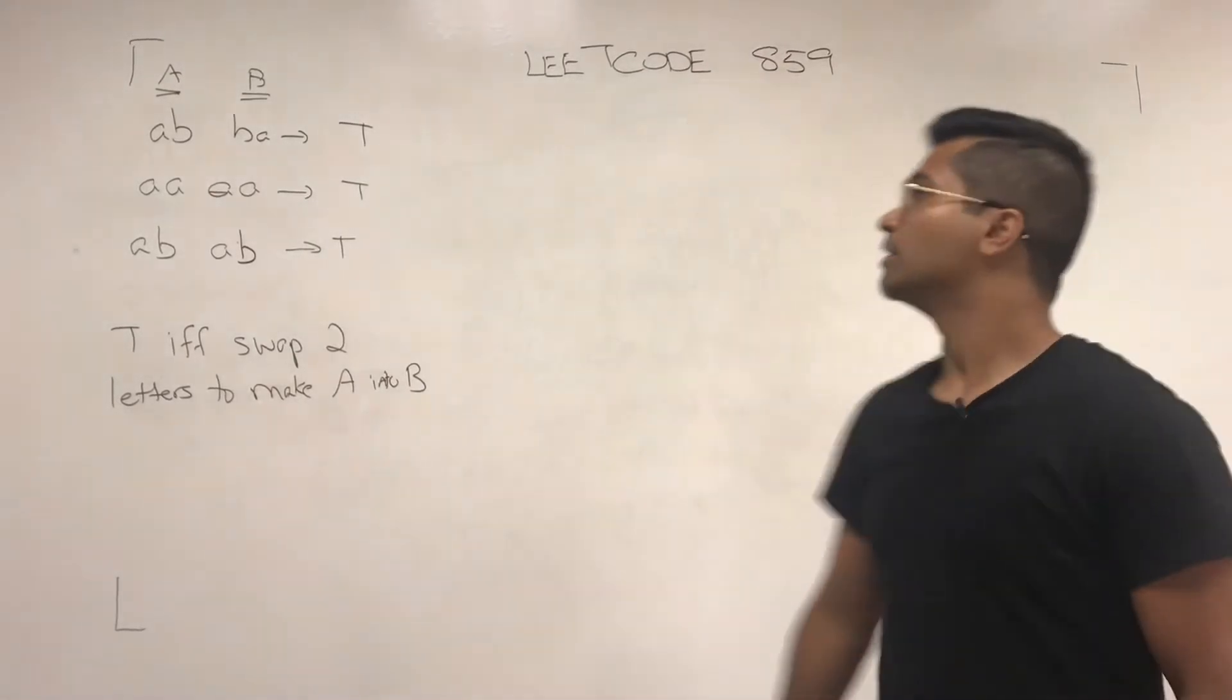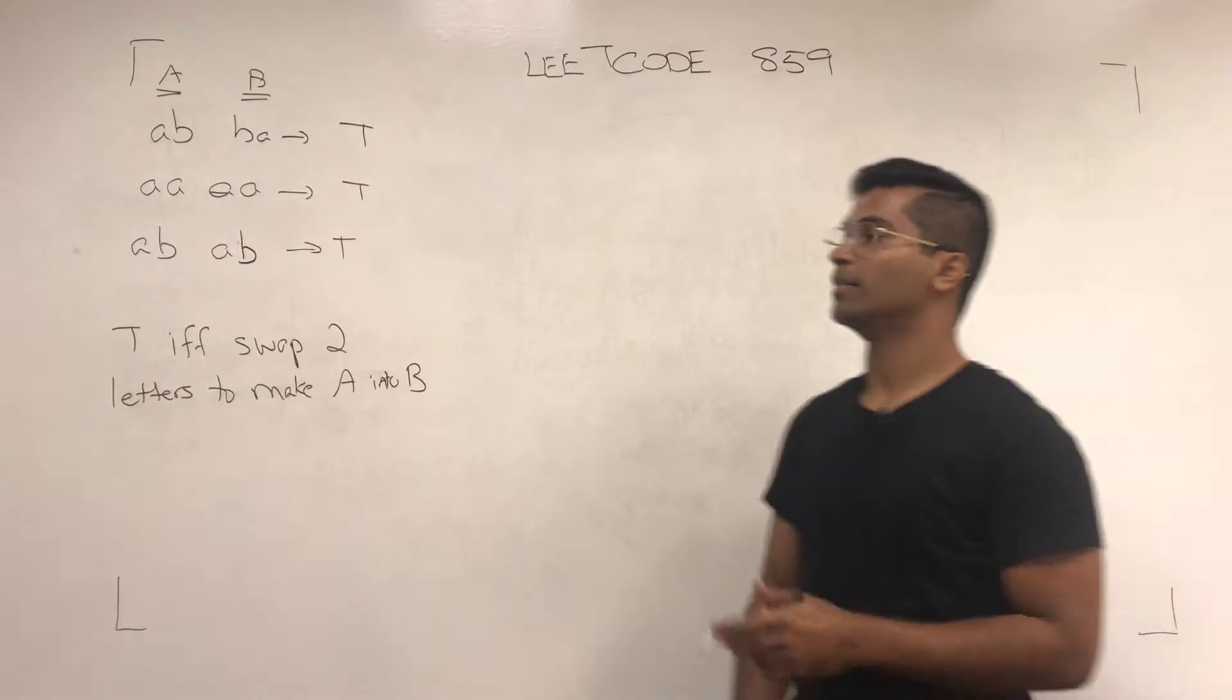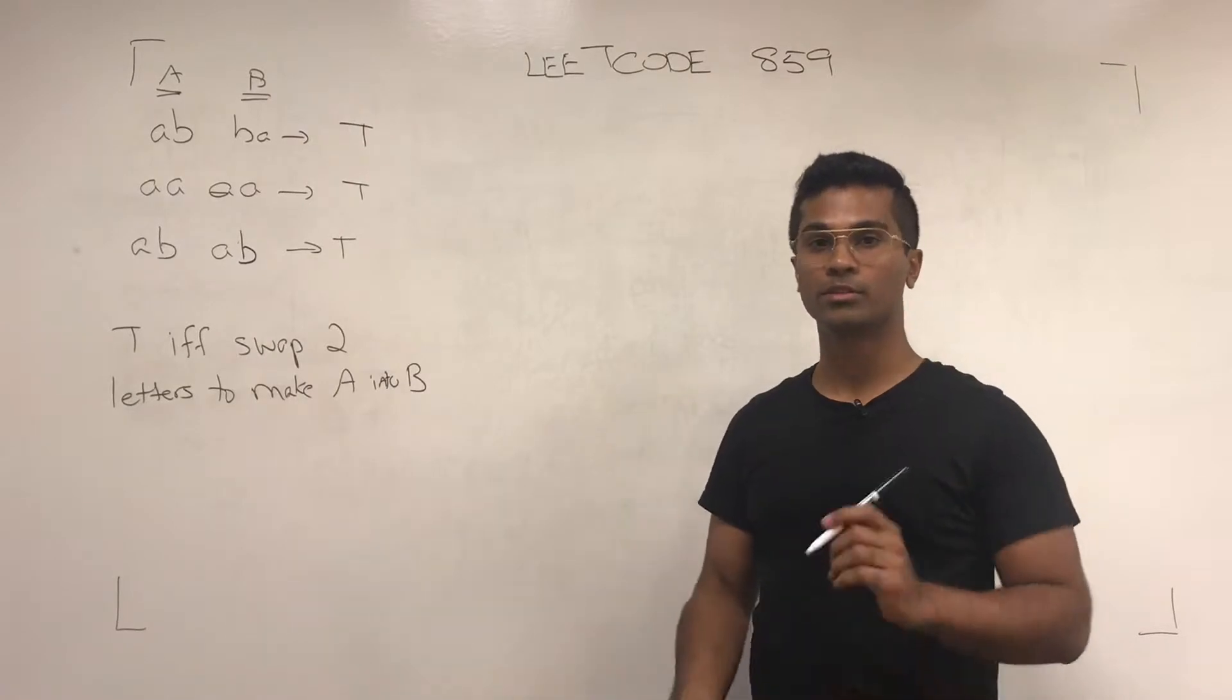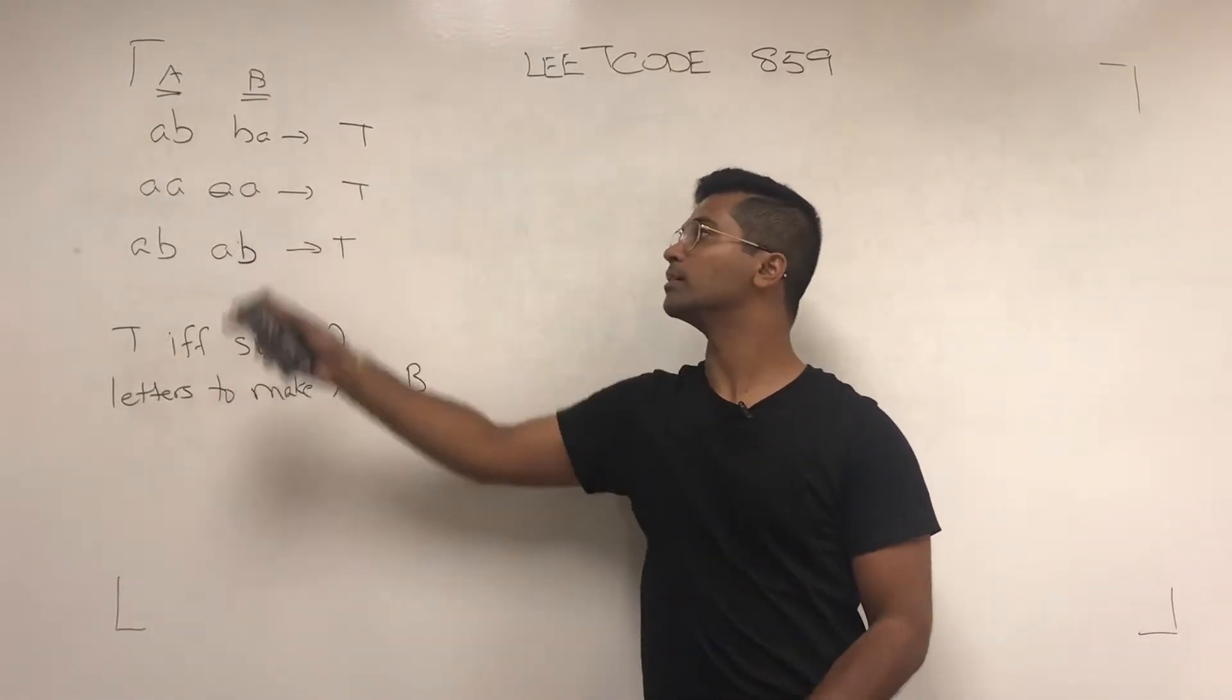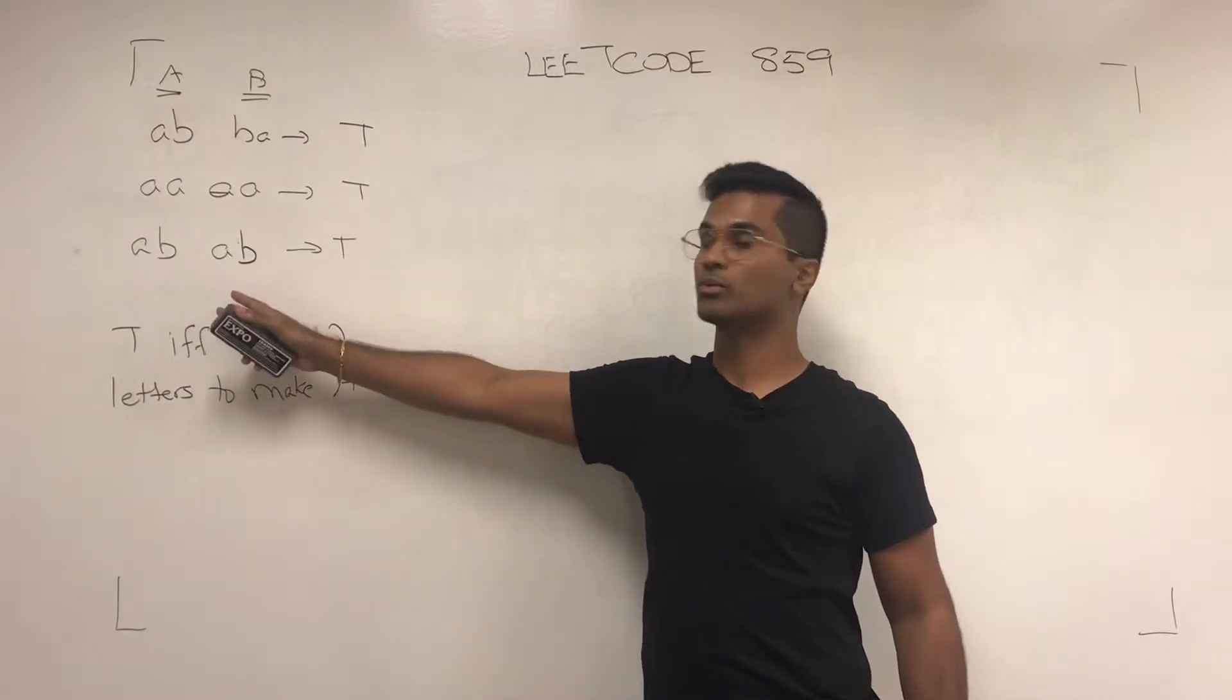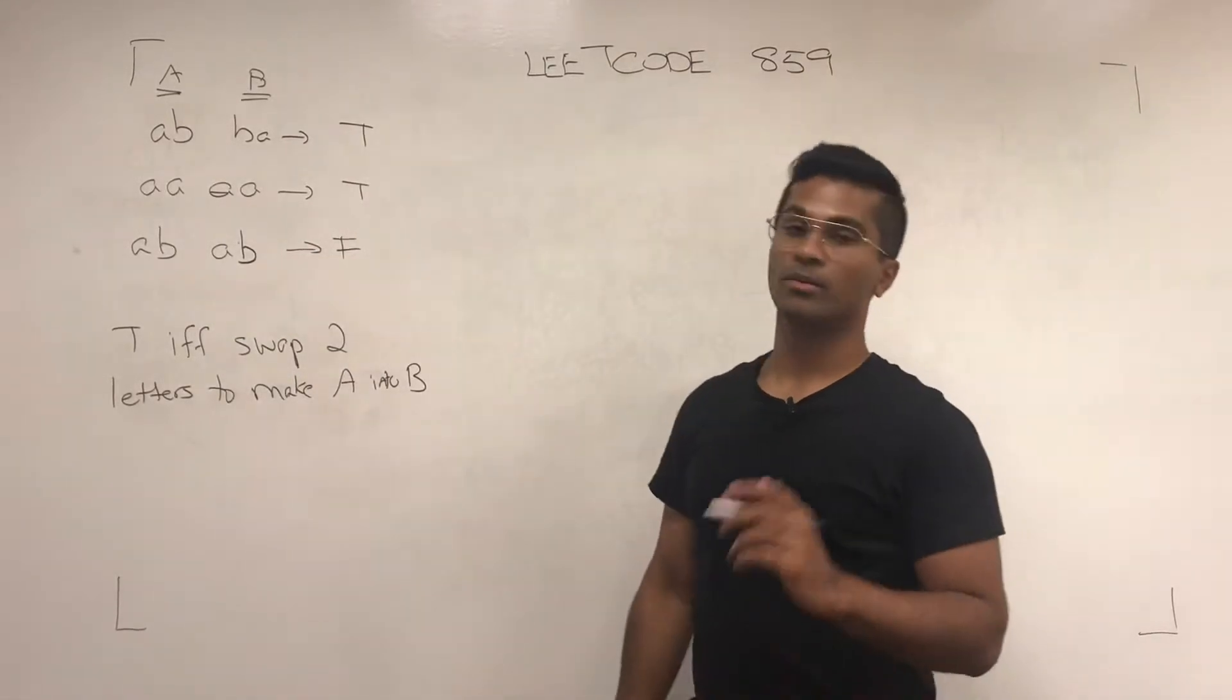What's up everyone, today we're going to be solving LeetCode 859 Buddy Strings. This takes two strings as input and the output is going to be true or false. It's going to be true if we can swap two letters to make A into B. For example, we can take AB, swap it and make it AA. If we have AB, we can't swap it so it's going to be false.